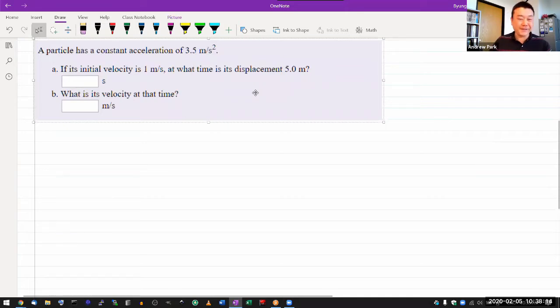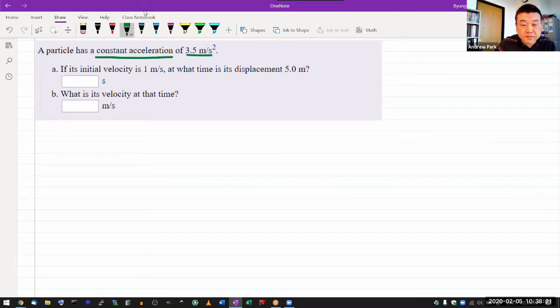So it says it has a constant acceleration. I'm just going to give this a label, A. And for most of my problem solving, I'm going to be using the letter A and I'll plug in the numbers at the end. It says initial velocity is one meter per second. So I'm going to give this a symbol, V naught for initial velocity. What time means, at what, okay, let me slow down and wait.